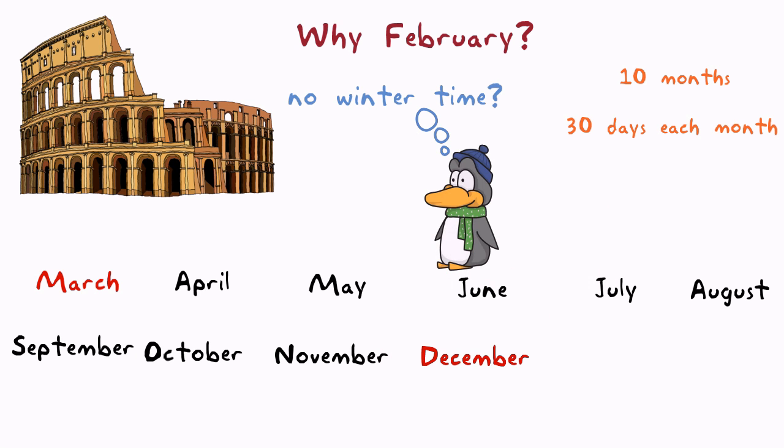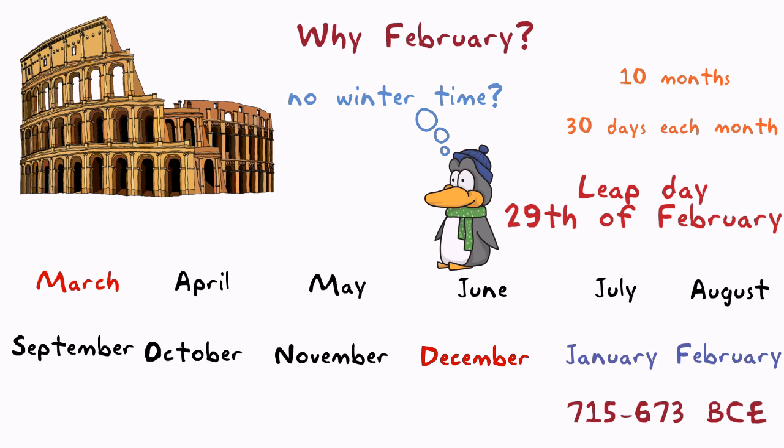It is thought that two extra months, January and February, were added sometime around 715 to 673 BCE. This would have made February the end of the year, which might explain why a leap day was added to that month.